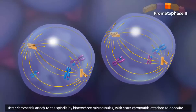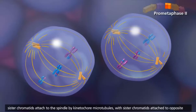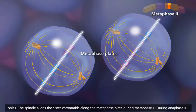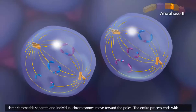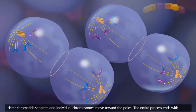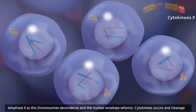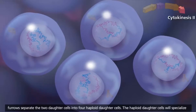In prometaphase II, the sister chromatids attach to the spindle by kinetocore microtubules, with sister chromatids attached to opposite poles. The spindle aligns the sister chromatids along the metaphase plate during metaphase II. During anaphase II, sister chromatids separate and individual chromosomes move toward the poles. The entire process ends with telophase II, as the chromosomes decondense and the nuclear envelope reforms. Cytokinesis occurs, and cleavage furrows separate the two daughter cells into four haploid daughter cells.